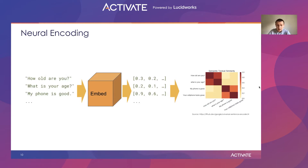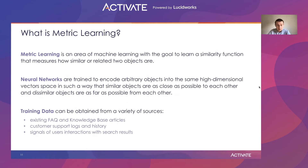This is why we go even further by using neural encoding. We train deep learning models that are able to account for word ordering and produce semantically rich embeddings for text. For achieving that, we use metric learning techniques. Metric learning is an area of machine learning with the goal to learn a similarity function that measures how similar or related two objects are. The training data can be obtained from a variety of sources — existing FAQ and knowledge-base articles, customer support logs and history, or signals of users' interactions with search results.